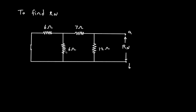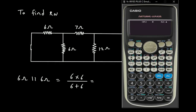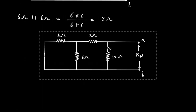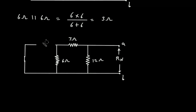Now here we can see this 6 ohm and 6 ohm are connected in parallel. So 6 ohm parallel with 6 ohm gives 6 into 6 divided by 6 plus 6. When the resistors are the same and connected in parallel, the value gets halved, so it is 3 ohm. We can replace these two resistors with a single 3 ohm resistor. Now this 3 ohm is connected with 7 ohm in series, so this will be 10 ohm.